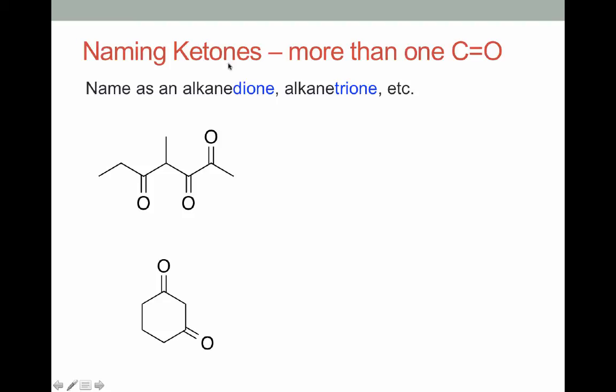One final situation you might run into is having more than one ketone in a molecule. And in that case, you'll name it as an alkanedione if there's 2, trione if there's 3, tetraone, and so on.